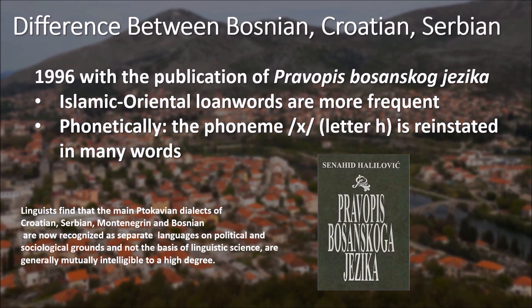You may be wondering: how is Bosnian different from Serbian or Croatian? Are they just one language? The answer is yes and no — the languages are largely the same but not identical. People from Bosnia, Croatia, Serbia, and Montenegro can understand each other, but the grammar is not the same. Here we have the very first Bosnian grammar book, 'Pravopis Bosanskog Jezika,' published by Senahid Halilović in 1996. This was the first time someone formally identified and established normative rules for the Bosnian language.